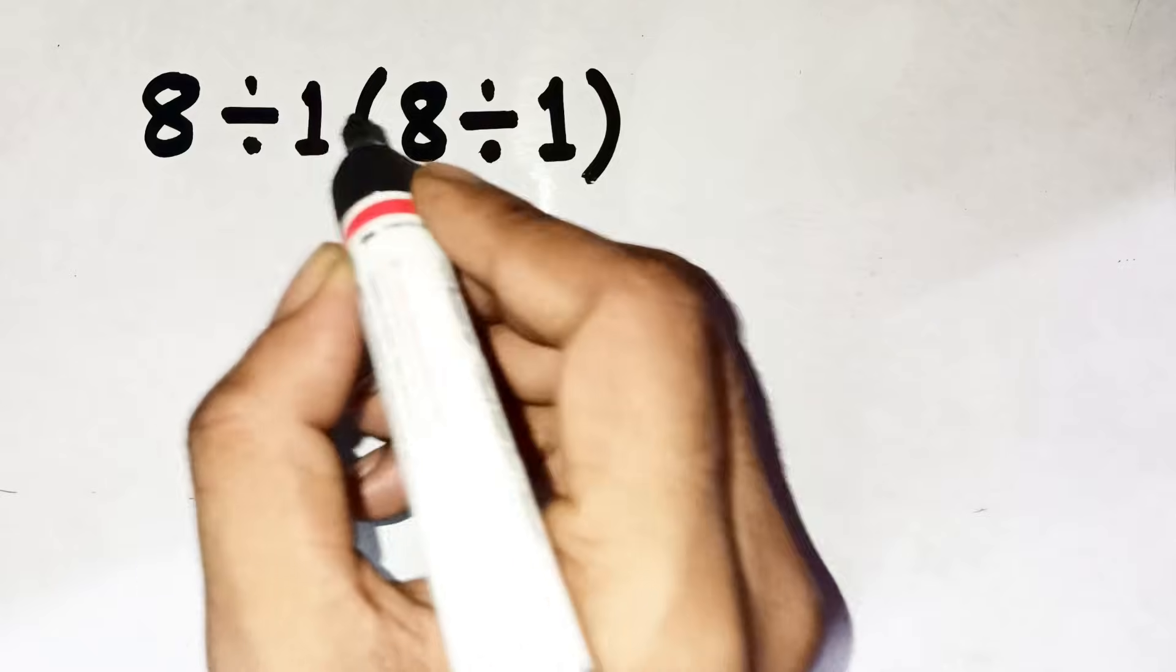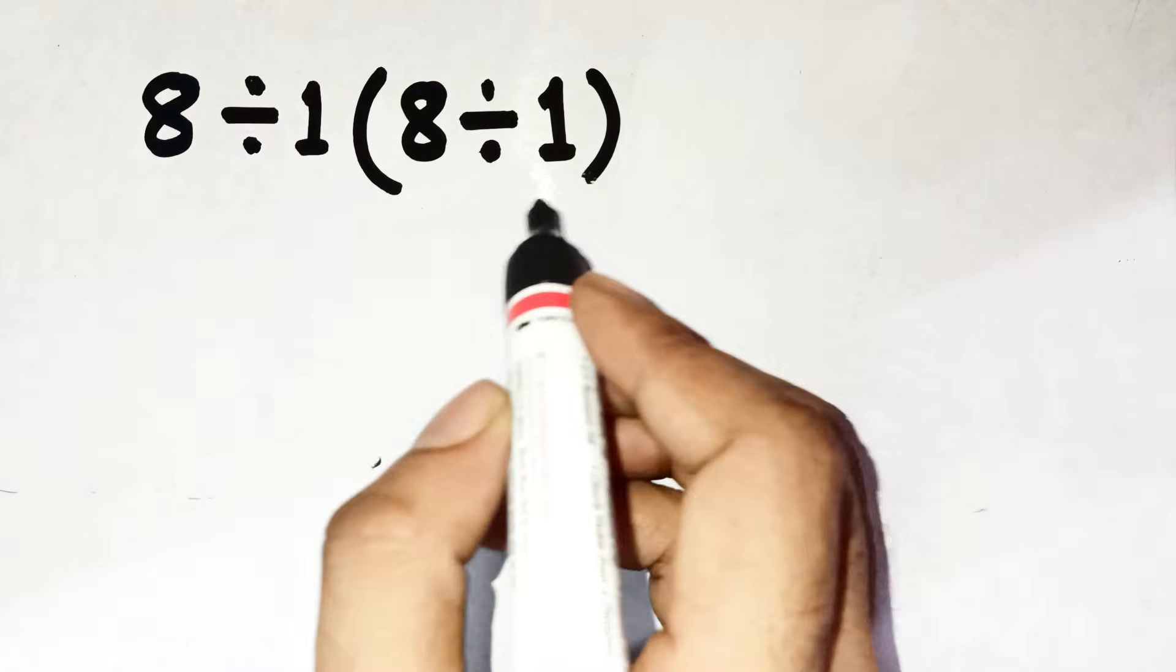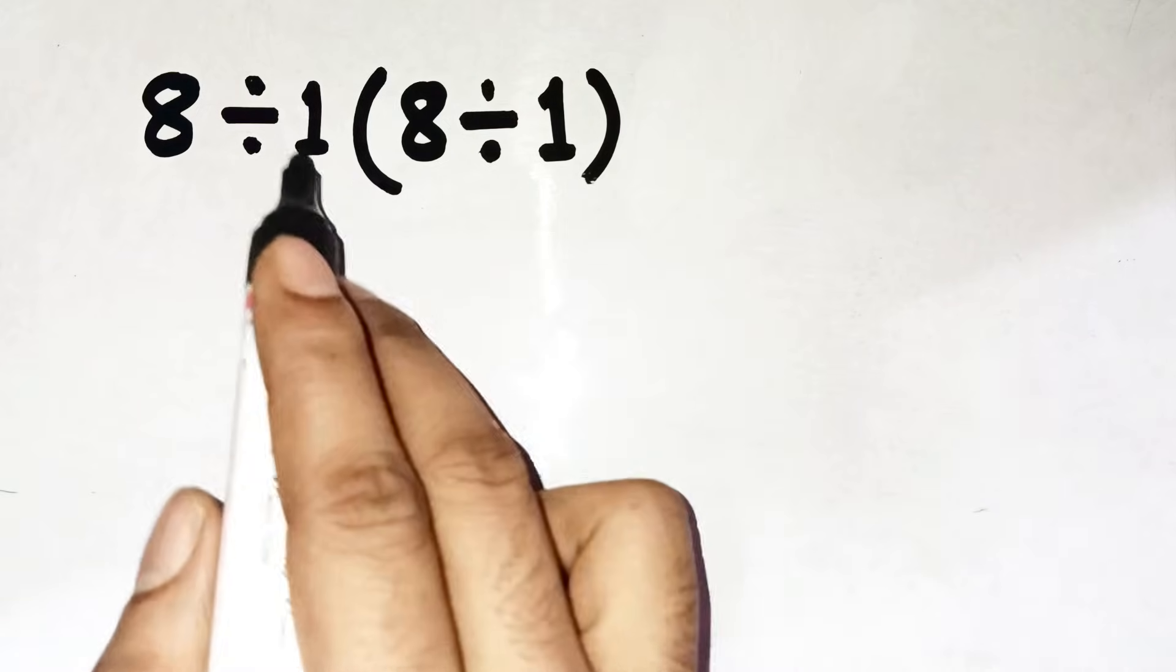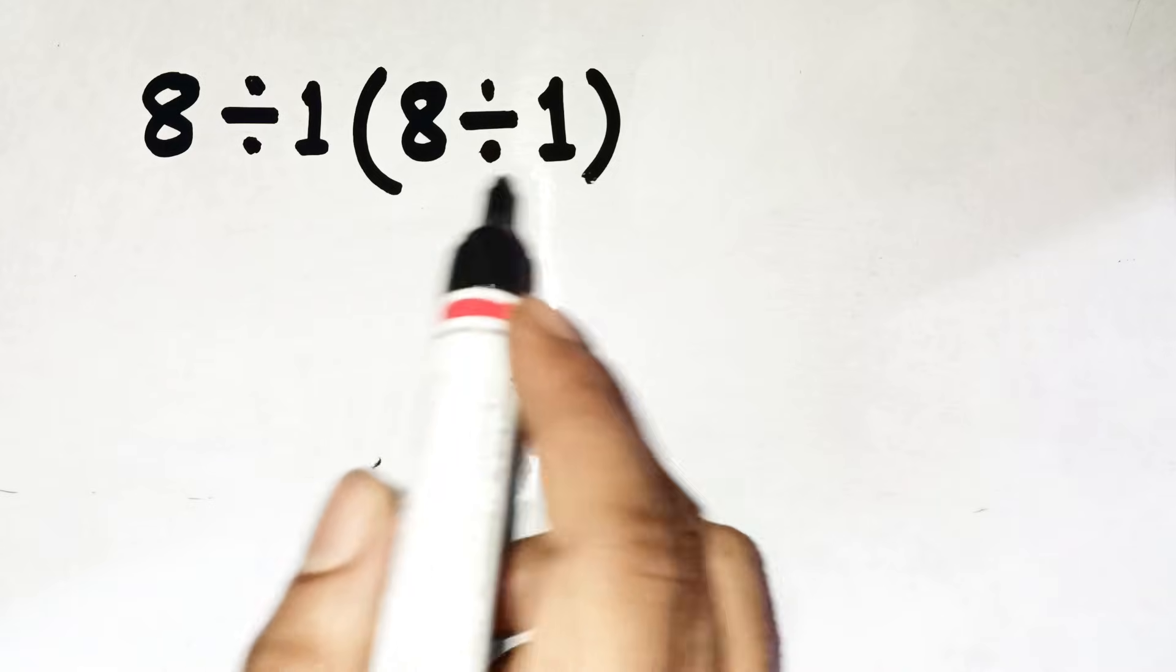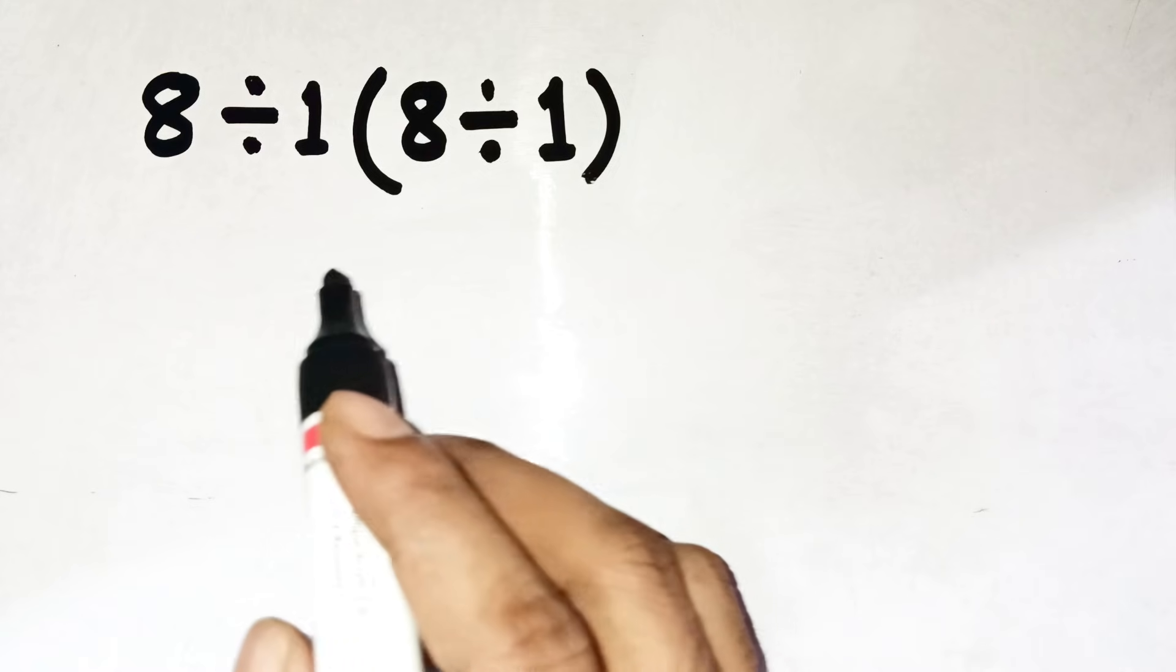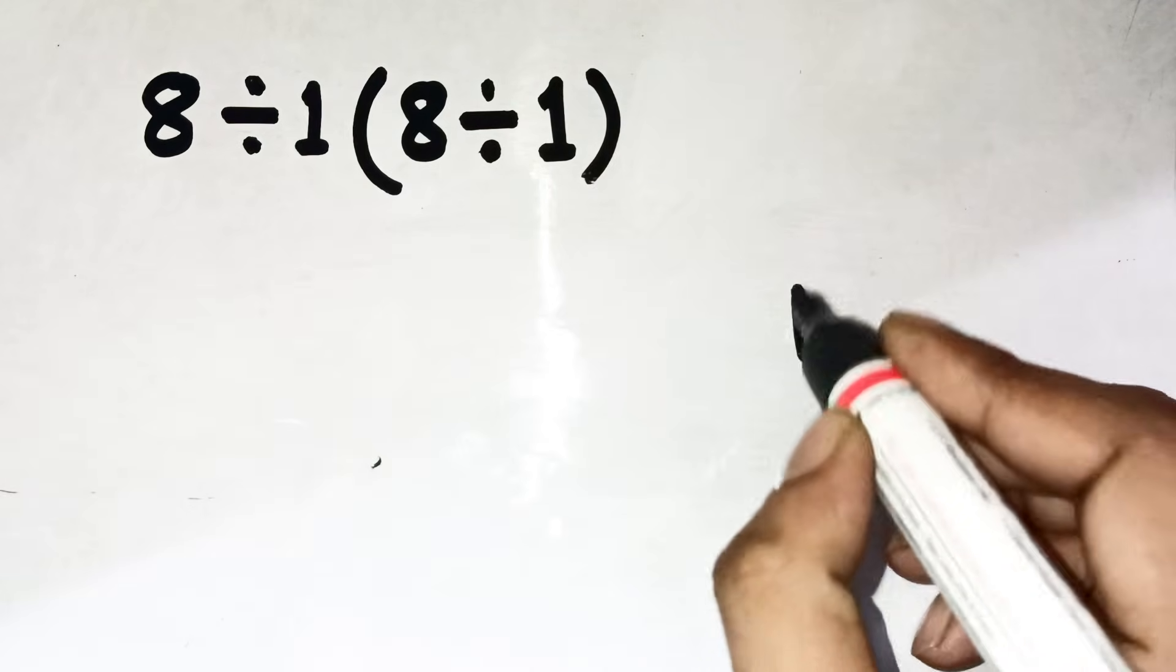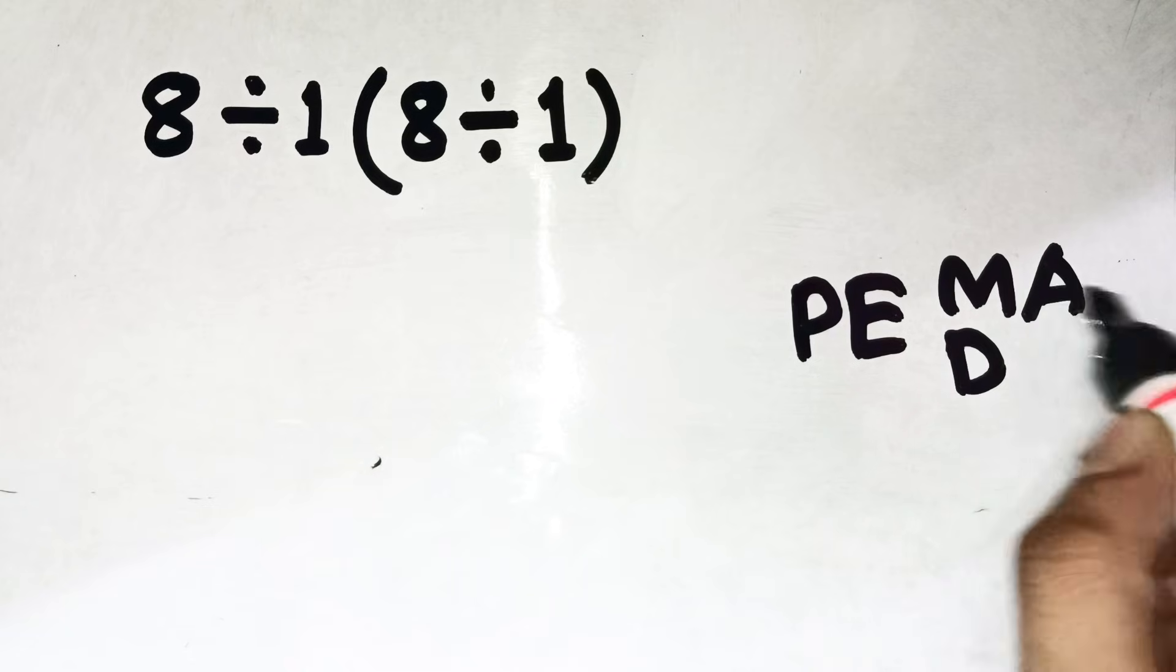All right, let's talk about where the mistake happens. People assume the bracket is automatically a multiplication waiting to happen. So they rush the inside part, get 8 divided by 1 equals 8, and then treat the outside 1 times 8 as simple multiplication. But the moment you jump to addition or multiplication before checking the actual order, that's where things go sideways.